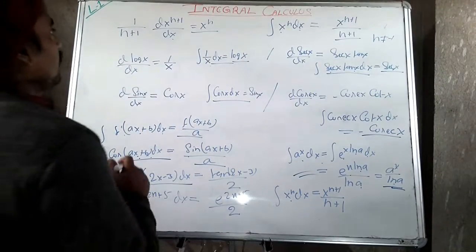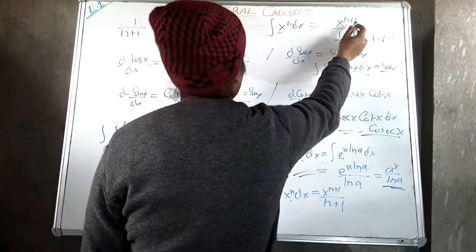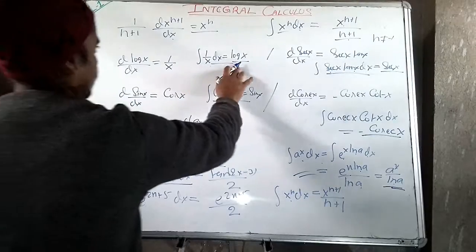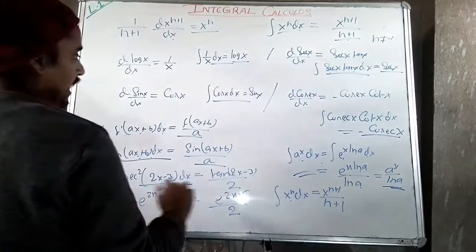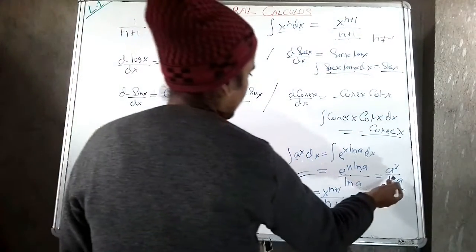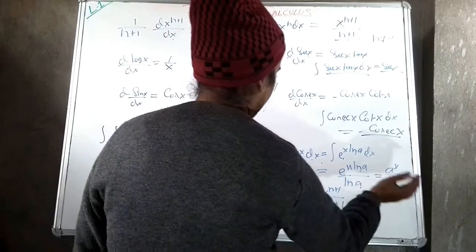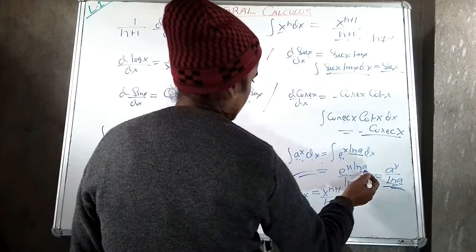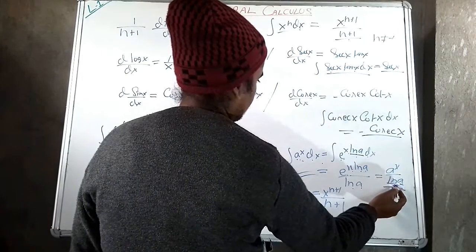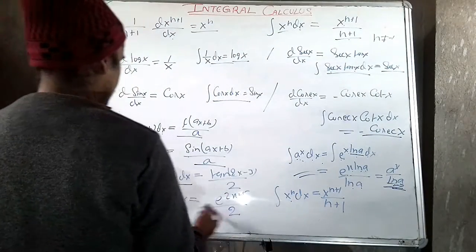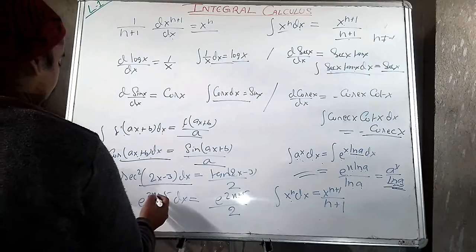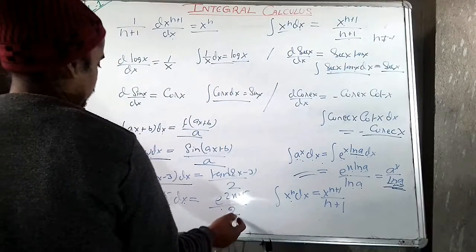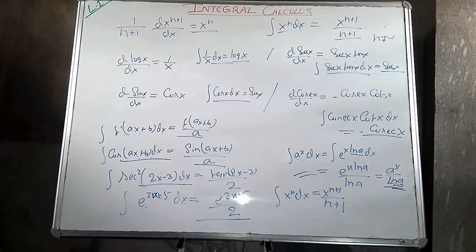Some important integration formulas: integration of x^n gives x^(n+1)/(n+1); integration of 1/x gives log(x); integration of sec(x)tan(x) gives sec(x); and integration of a^x dx gives a^x divided by ln(a). Since a^x can be written as e^(x·ln(a)), this becomes e^(x·ln(a)) / ln(a), which is a^x / ln(a). Also, ∫e^(x+5) dx gives e^(x+5)/2.